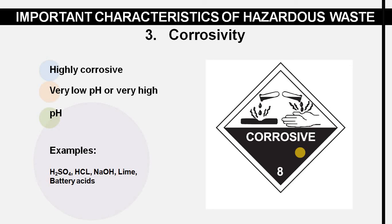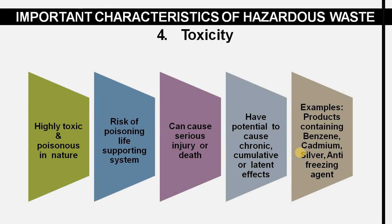Corrosive waste has a pH less than 2 or greater than 12.5 — very low pH or very high pH. Examples include H2SO4 (sulfuric acid), HCl, NaOH, lime, and battery acid.